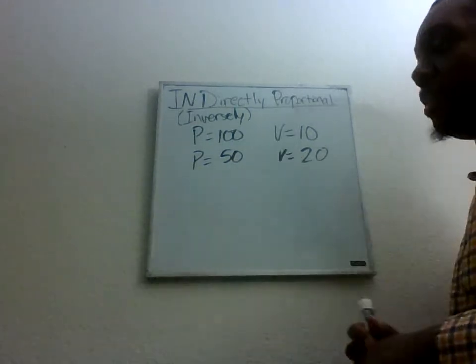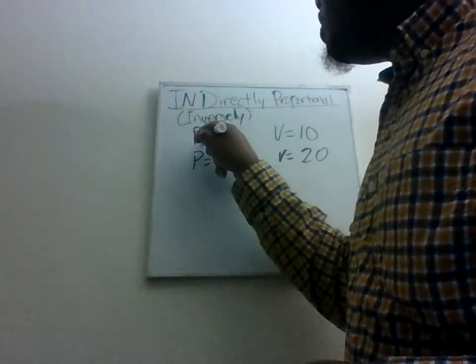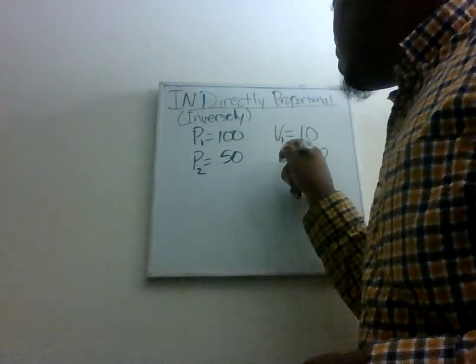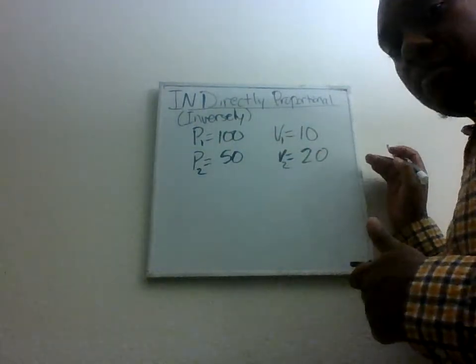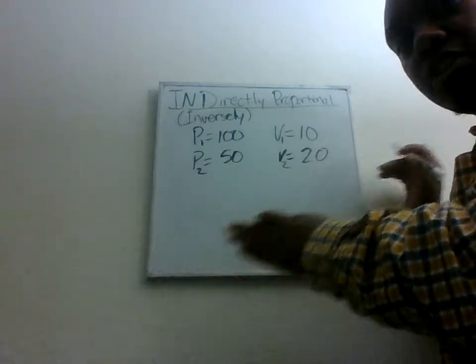What I tend to tell people to do, though, instead, is to multiply these two numbers. And let's call this P1, V1, and P2, V2, just to differentiate between them. So pressure 1, volume 1, pressure 2, volume 2.